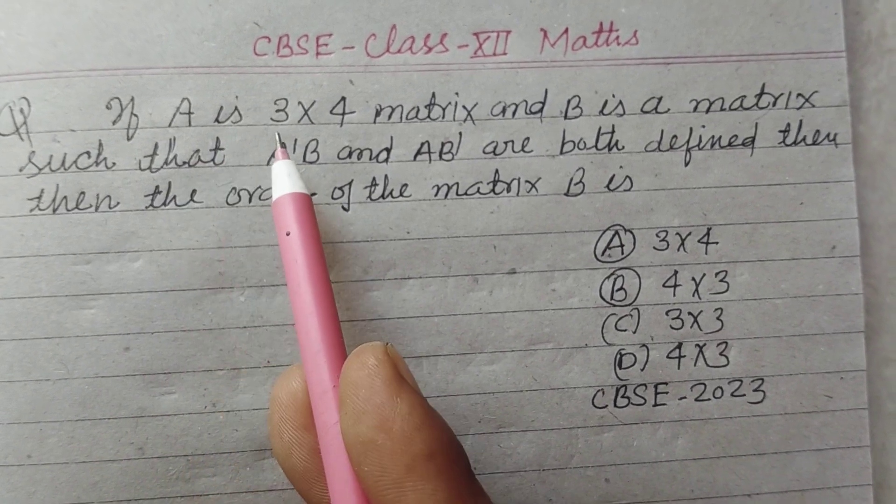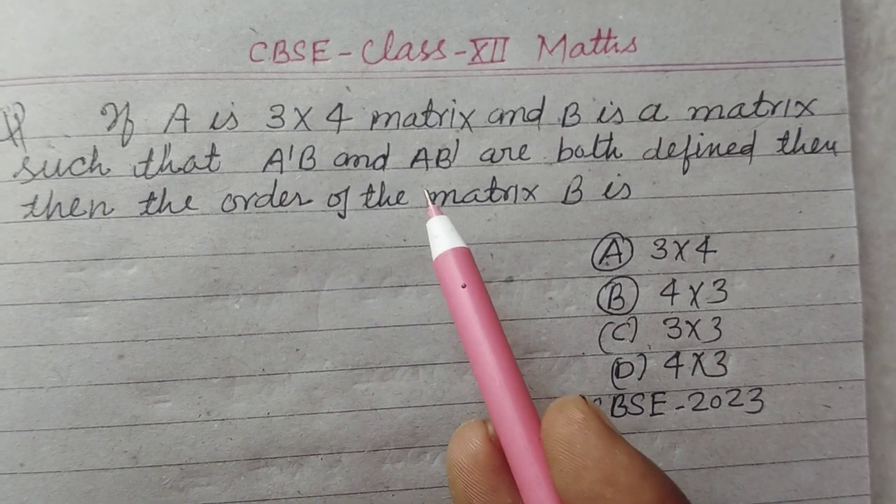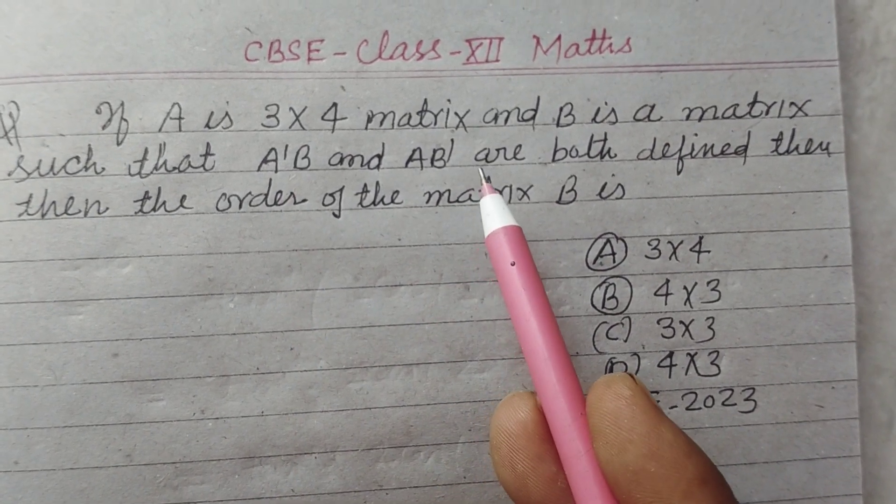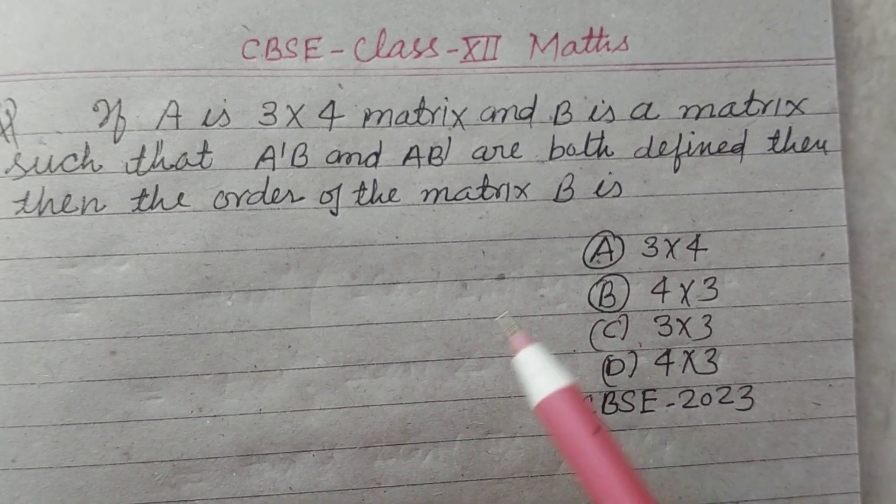If A is 3 by 4 matrix and B is a matrix such that A'B and BA' are both defined, then the order of the matrix B is.